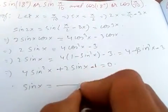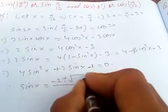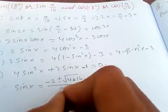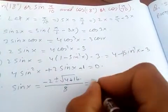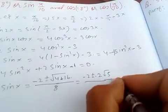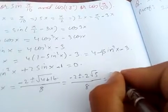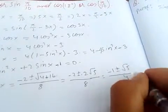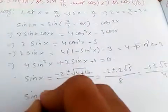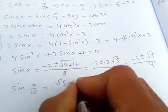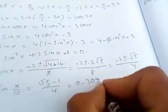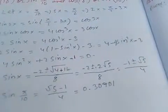Using the quadratic formula, sine x equals negative 2 plus or minus square root of b squared minus 4ac, which is negative 2 plus or minus square root of 4 plus 16, all over 8. This simplifies to negative 1 plus or minus square root of 5, all over 4. The negative solution is rejected, so sine pi over 10 equals square root 5 minus 1, all over 4, which is approximately 0.30901.